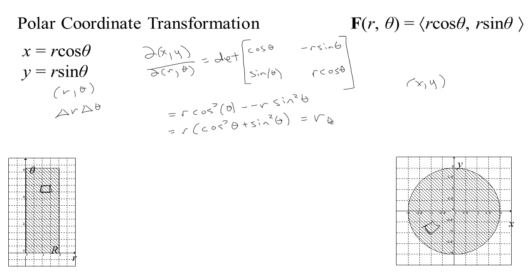So our determinant turns out to be r cosine squared theta minus minus r sine squared theta, which is r times cosine squared theta plus sine squared theta after factoring out the common r. And cosine squared theta plus sine squared theta is 1, so this is just equal to r. So if we have a region that's delta r by delta theta, its area over in x-y space is going to be r delta r delta theta. Technically it should be the absolute value of r, but to avoid working with absolute values, we'll always try to describe our region using positive radii.